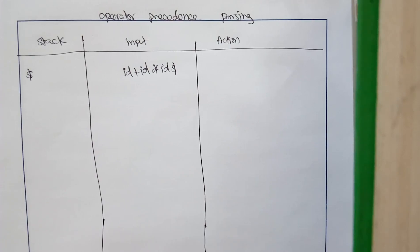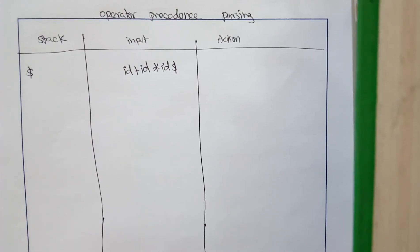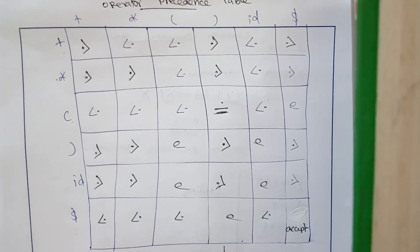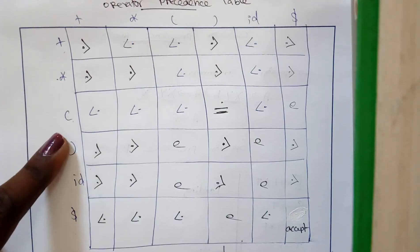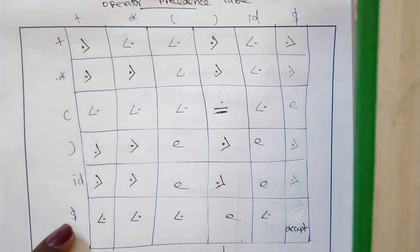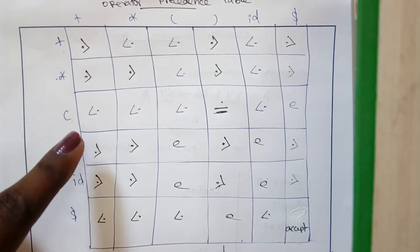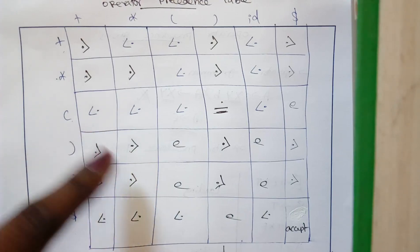Now the next step is to take some input and, based on the table, we will perform this operator precedence parsing. I will show you the operator precedence table that we have made after finding the leading and trailing of a variable. Here we have all combinations of the terminal symbols — all the terminals are compared with the others, and we have a special symbol dollar.